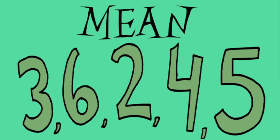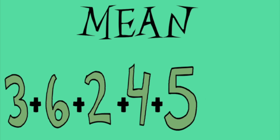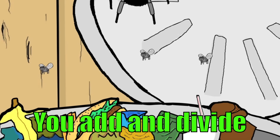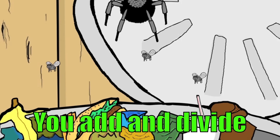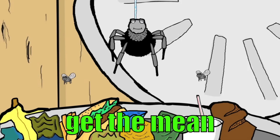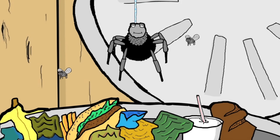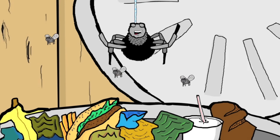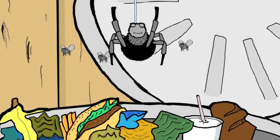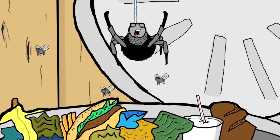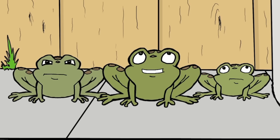So basically, you add and divide. The way that you get the mean is you add and divide. Add and divide. That is the mean, or sometimes called average.